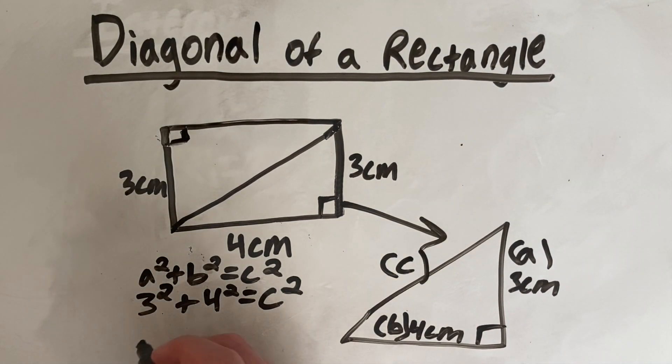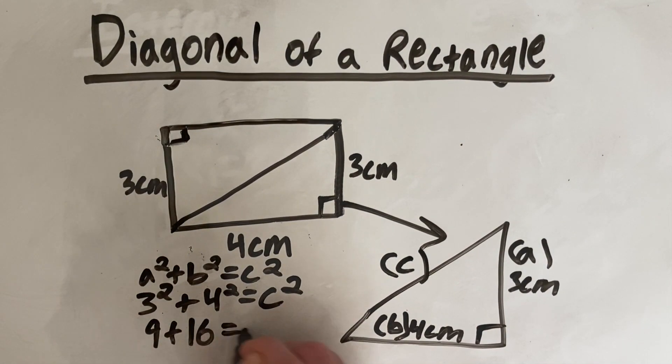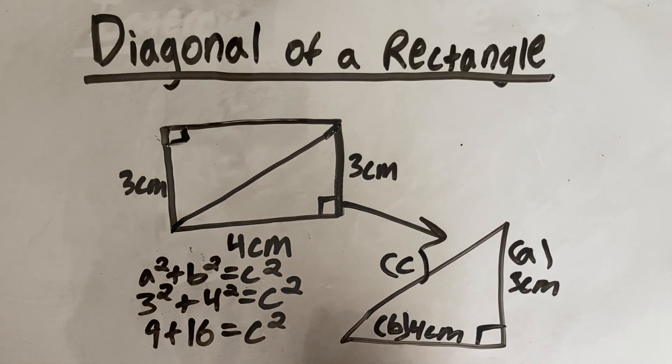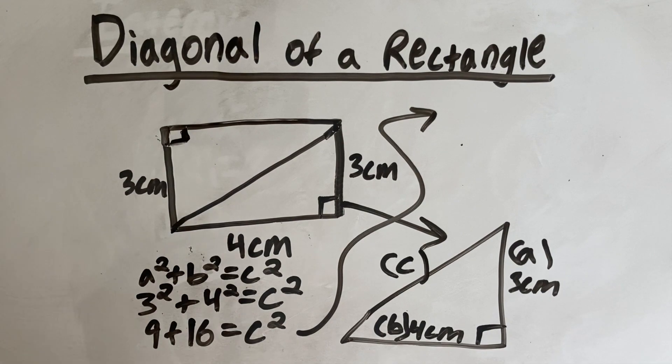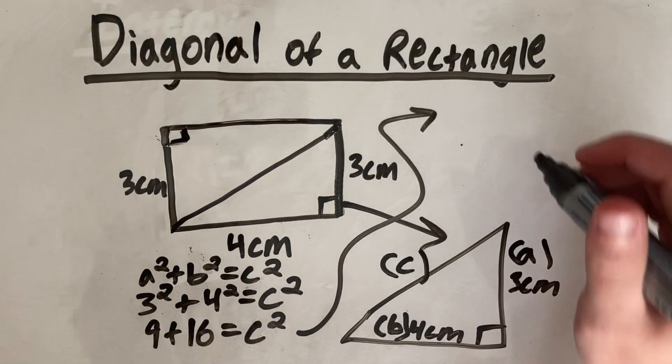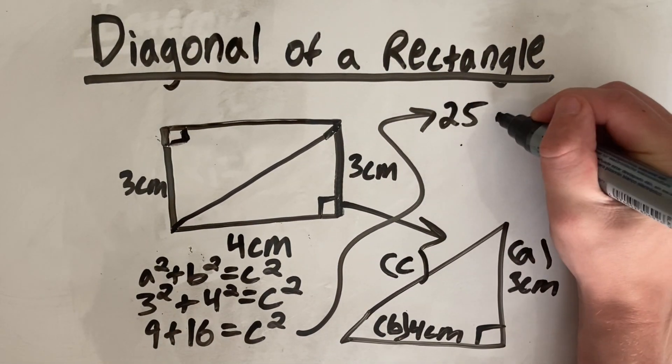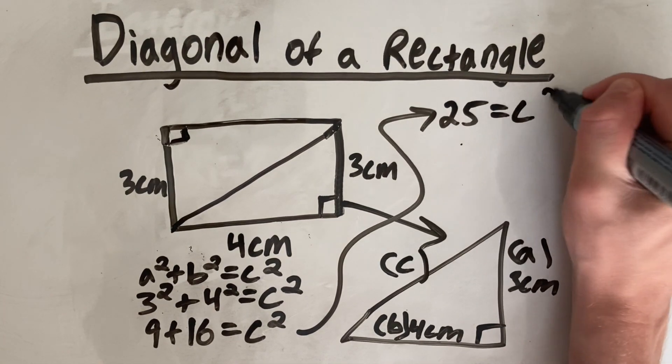So 3 squared is 9 plus 4 squared, which is 16, is equal to C squared. I'll just draw an arrow up here because we're running out of space. 9 plus 16 is 25. So 25 equals C squared.